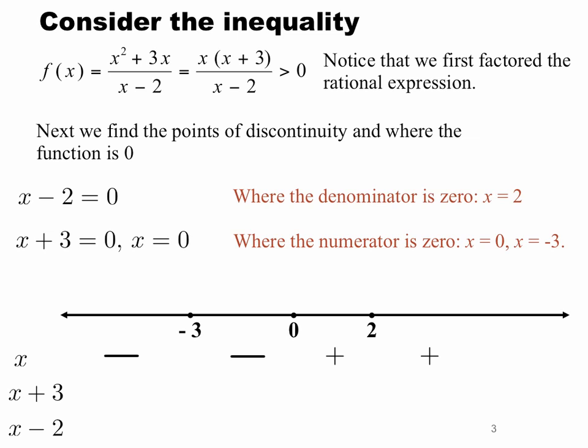Now let's look at x plus 3. It'll certainly be 0 at minus 3. If we choose a value to the left of minus 3, say minus 5, minus 5 plus 3 is negative 2, so to the left of minus 3, that factor is negative. If we choose a factor to the right of minus 3, say 1, and we plug that into the factor 1 plus 3 is positive, so all of the values of x to the right of minus 3 will cause that factor to be positive.